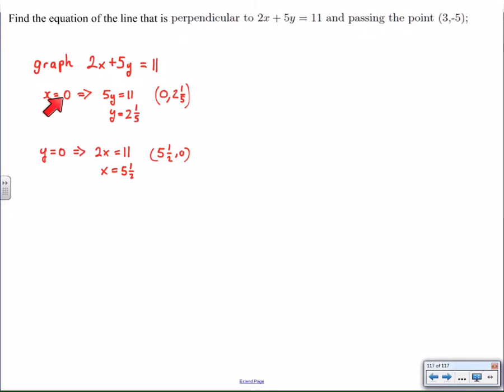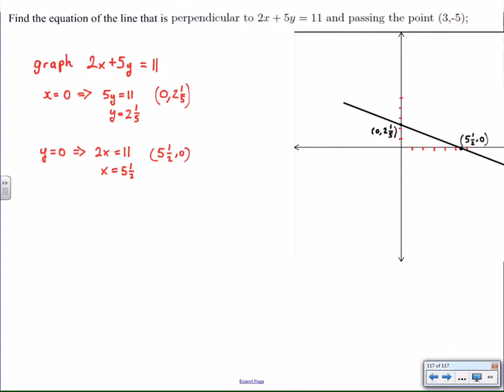So I found that when x equals 0, y is 2 and 1/5, and when y equals 0, x is 5 and 1/2, which are my intercepts. So I get this line and that shows a decreasing line with a very small numbered slope.